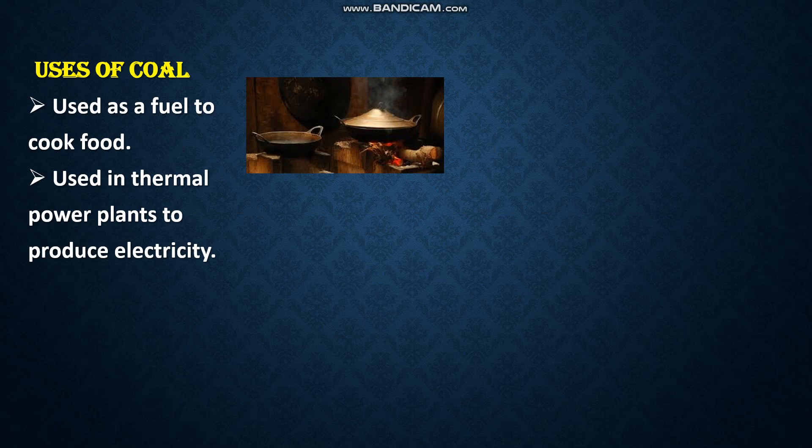In hydroelectric power plants, water from a height — from a dam — is made to fall on turbines. Once the turbines rotate, they are connected to a generator which converts mechanical energy to electrical energy. In a thermal power plant, how is the turbine rotated? Using steam. How is the steam produced? By boiling water.